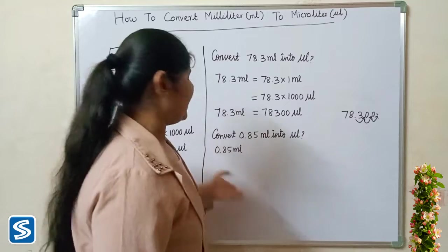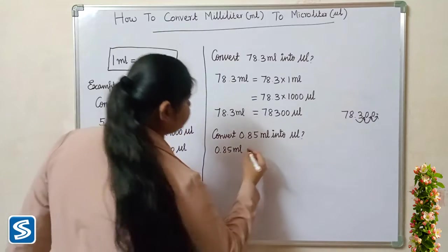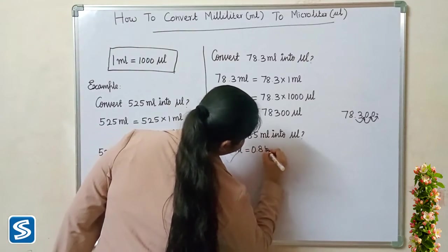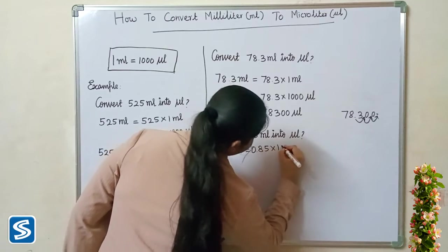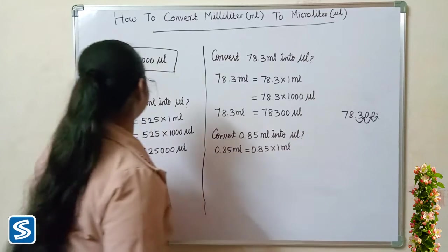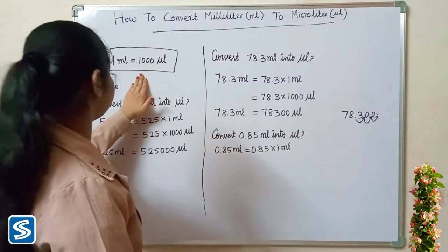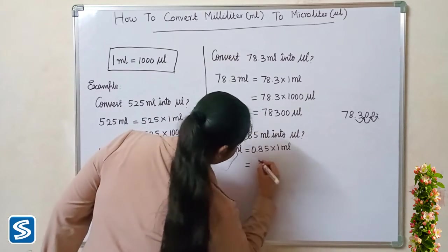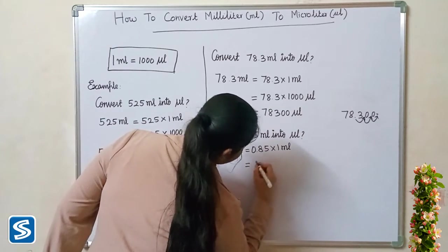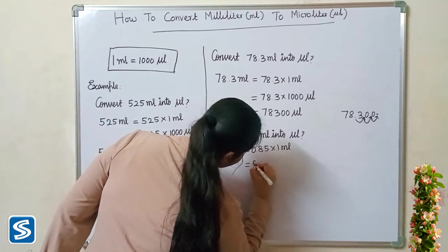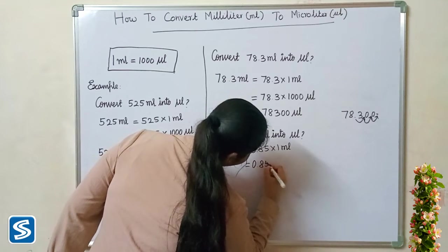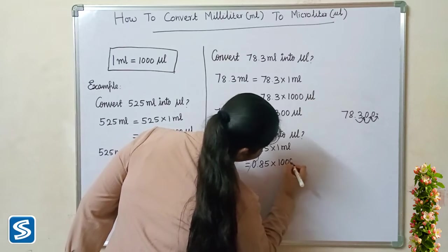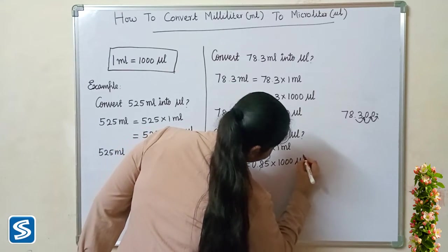Zero point eight five milliliters — this can be written as zero point eight five multiply one milliliter. Now we substitute one thousand microliters in the place of one milliliter, so zero point eight five multiply one thousand microliters.